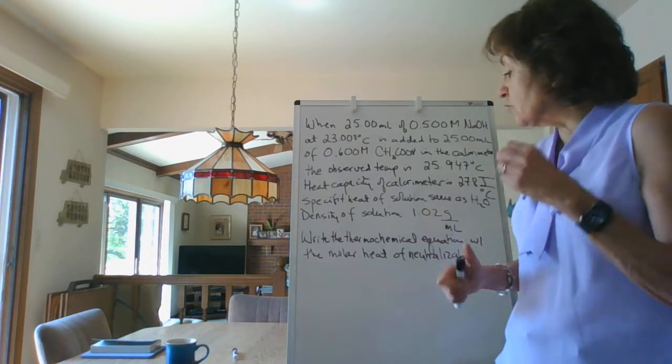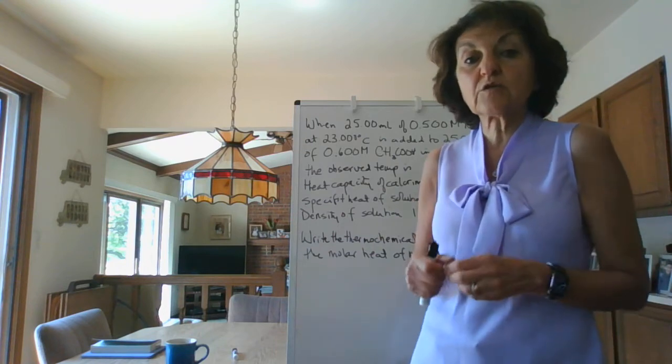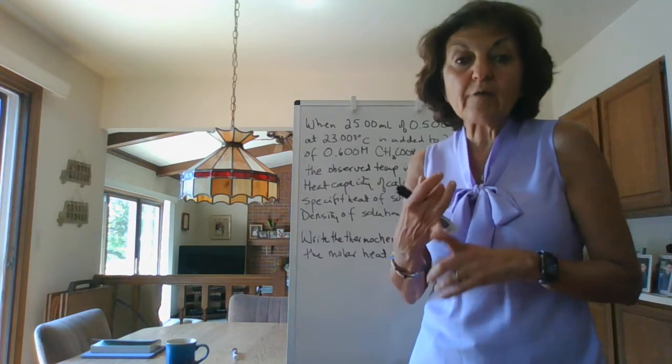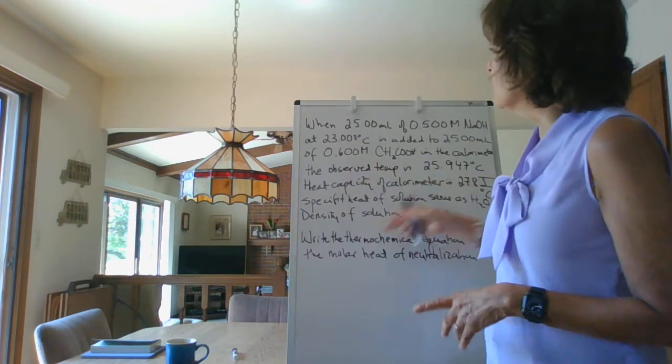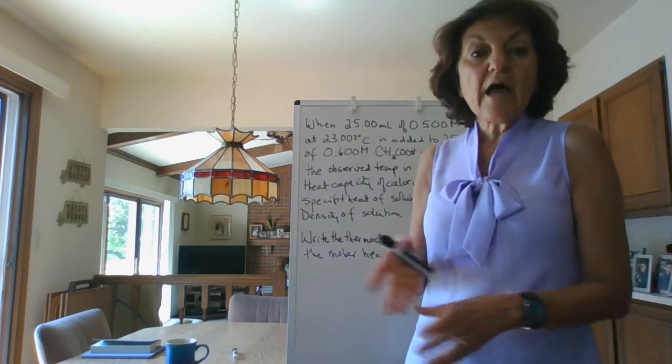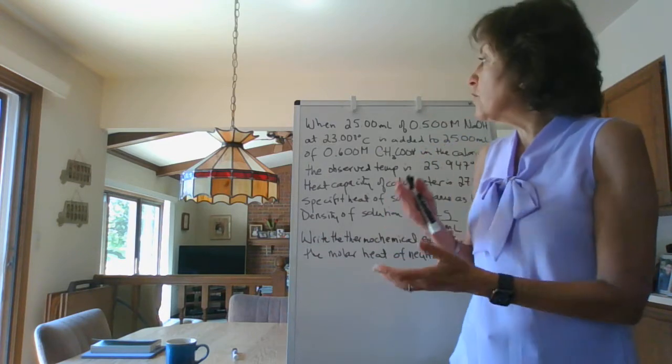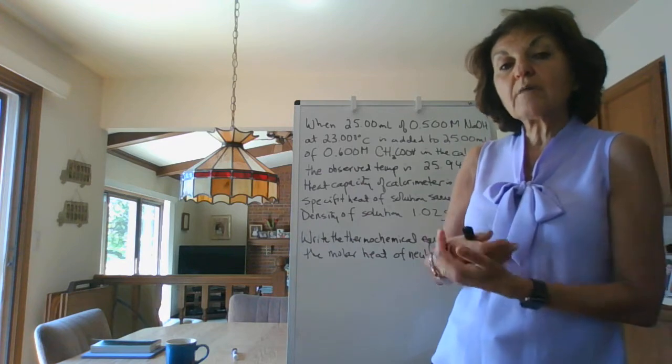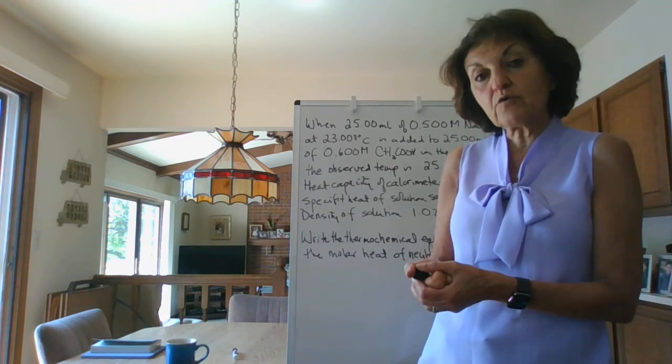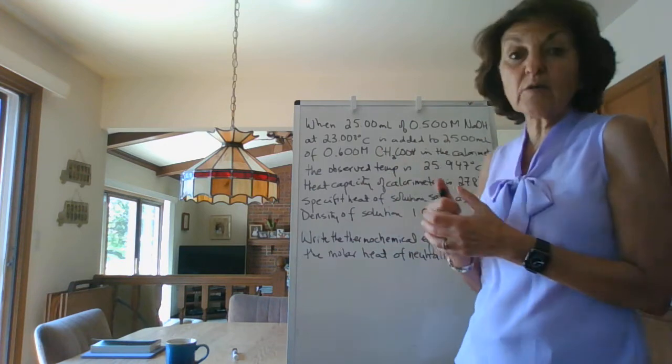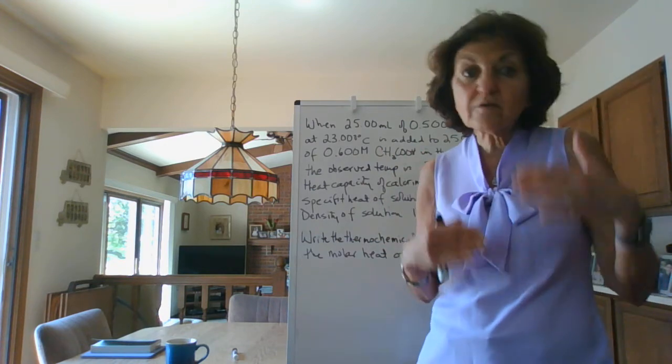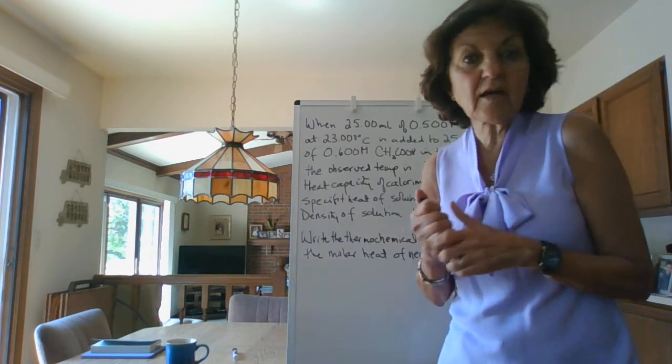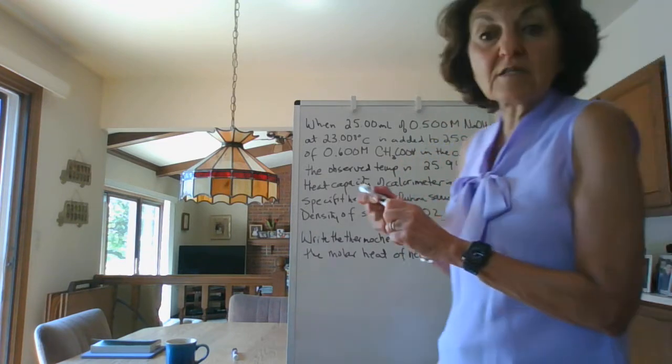What do they want you to do? They want you to write the thermochemical equation with the molar heat of neutralization. That means you need to first figure out how much heat is evolved using this, and then once you figure that out, you are going to figure out per mole how much heat is being produced. This is also a limiting reactant problem, so it's several steps that are involved. Let's just go step by step.